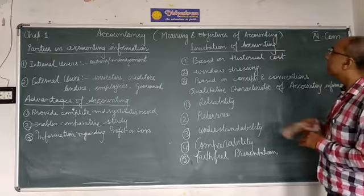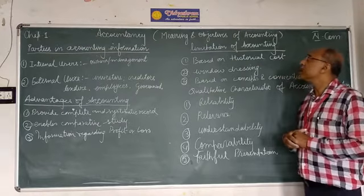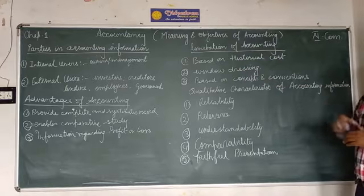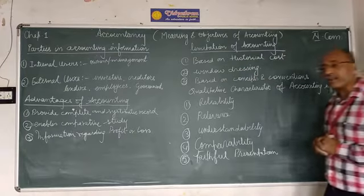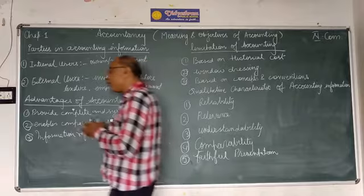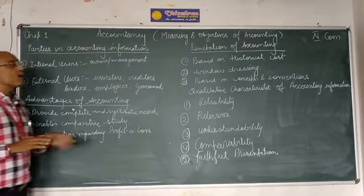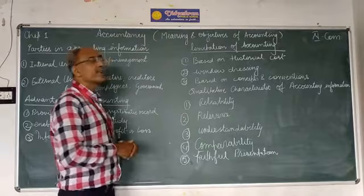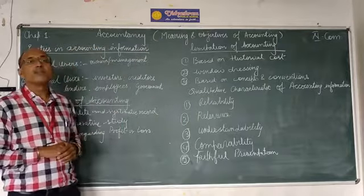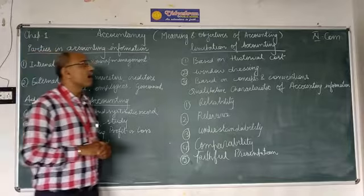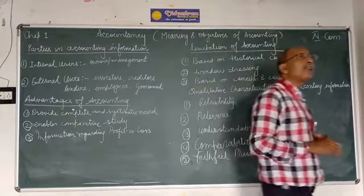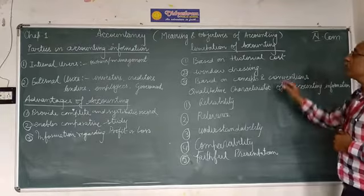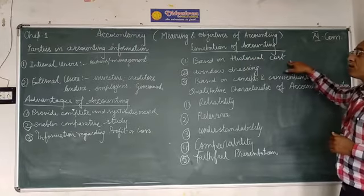Now, there are a few limitations in accounting. The first is that it is based on historical cost. The accounting system is based on historical cost, meaning whatever cost you incurred at the time of purchasing the asset must be included. You are not supposed to use the cost prevailing in today's context.